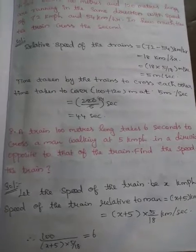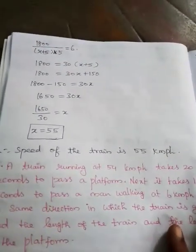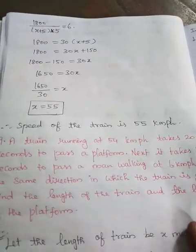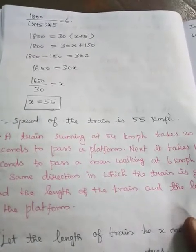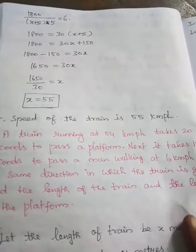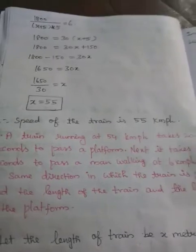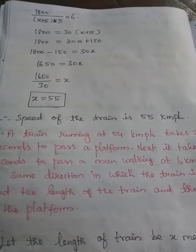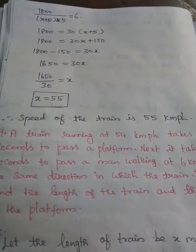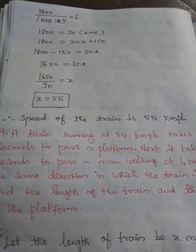Therefore, 100 divided by (x plus 5) into 5 by 18 equals 6. So 1800 divided by (x plus 5) into 5 equals 6. So 1800 equals 30 into (x plus 5). 1800 equals 30x plus 150. So 1800 minus 150 equals 30x. 1650 equals 30x. 1650 divided by 30 equals x. So x equals 55.